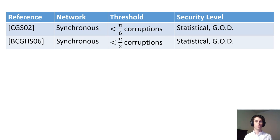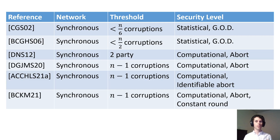Follow-up work improved this threshold to the optimal one-half threshold for statistical security. Later work considered the dishonest majority case, starting with the special case of two-party quantum computation. This work achieves computational security with abort, and was later generalized to multiparty quantum computation where all but one party might be corrupted. Further work improved the security guarantee to identifiable abort, and another work achieved a constant-round protocol, although they only achieve security with abort.